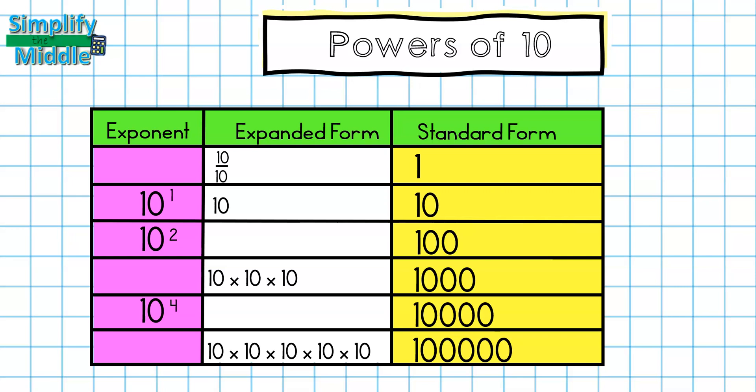Let's take a moment to look for patterns. In the standard form column, I see that I go from 1 to 10 to 100. So I'm increasing in place value as I go from one part of my standard form to the next part of my standard form.